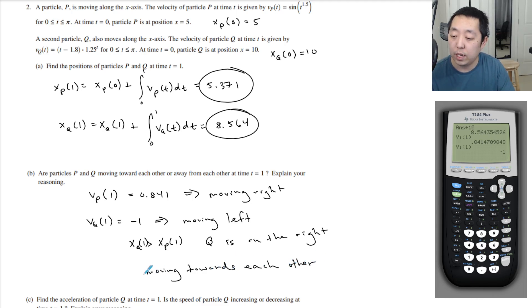So that means they are moving towards each other. Okay, because a positive velocity means it's moving right, negative velocity moving left. P is going right, Q is going left, Q is on the right.